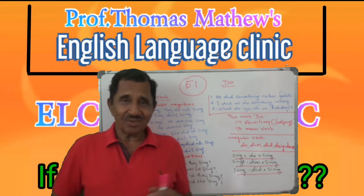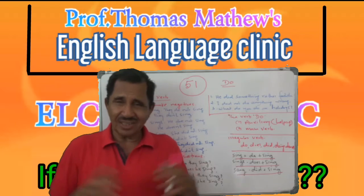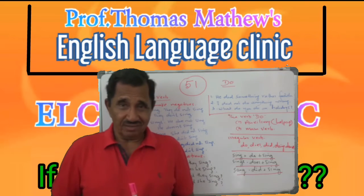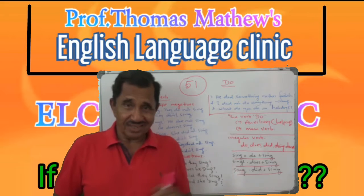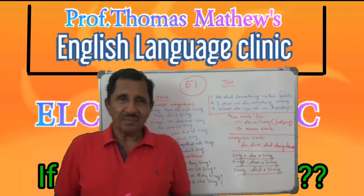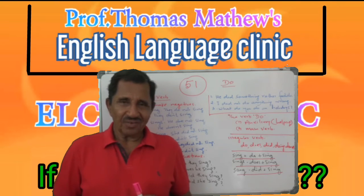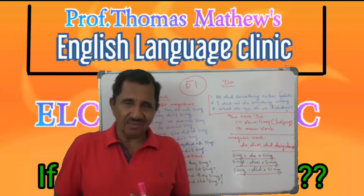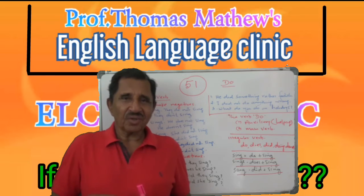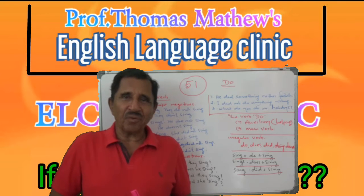Other tenses, you know, have more than one word: 'is going,' 'I'm going,' 'have gone,' 'has gone,' 'have been going' — these are all tense forms with more than one word. But simple present and simple past have only one word. And therefore, if you have to make a negative or a question, you have to take the help of 'do.'